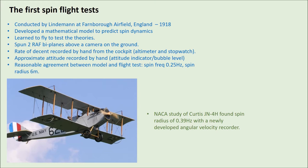Those particular aircraft had a spin radius of around six meters. Around the same time in America, NACA were looking at similar tests with a Curtis JN4H and found similar results. That aircraft had a slightly higher spin frequency than what Lindemann found, and they were using a newly developed angular velocity sensor which we're going to talk about shortly.